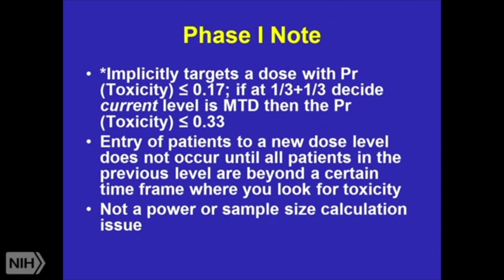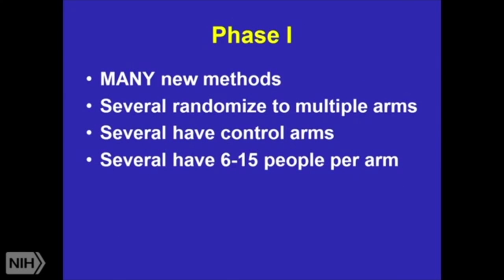There are lots and lots of new methods — almost all of them are better than the method I just told you, but they are all based on that method. Sometimes in phase one now I'm randomizing to multiple different arms — various control arms, maybe placebo, maybe active control. If I'm expecting a lot of toxicity, I need this comparison to figure out: is this additional toxicity because of my new therapy, or is this the general background rate of toxicity? Especially when dealing with diseases where I don't want a lot of toxicity, I might put 6 to 15-plus people per arm. If I'm expecting wide heterogeneity in effects and toxicities, I may want to include more people in this phase one layer. There are CRM, Bayesian methods, and lots of different methods you can use here.